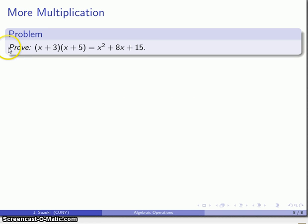So here's a somewhat more involved proof. Prove that x plus 3 times x plus 5 is x squared plus 8x plus 15. Again, this is a proof problem, so no algorithm.